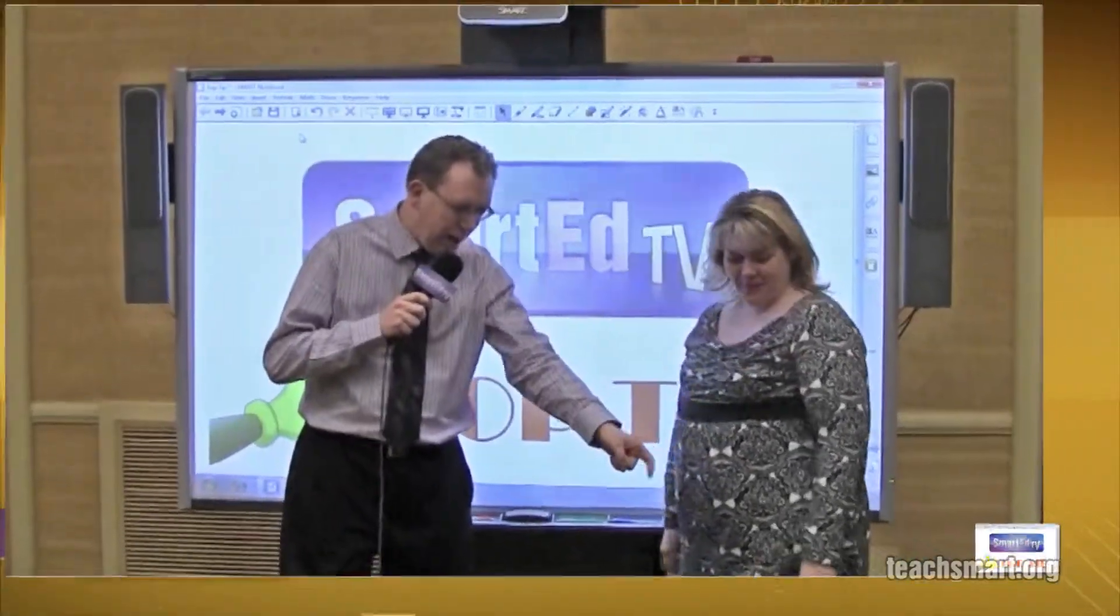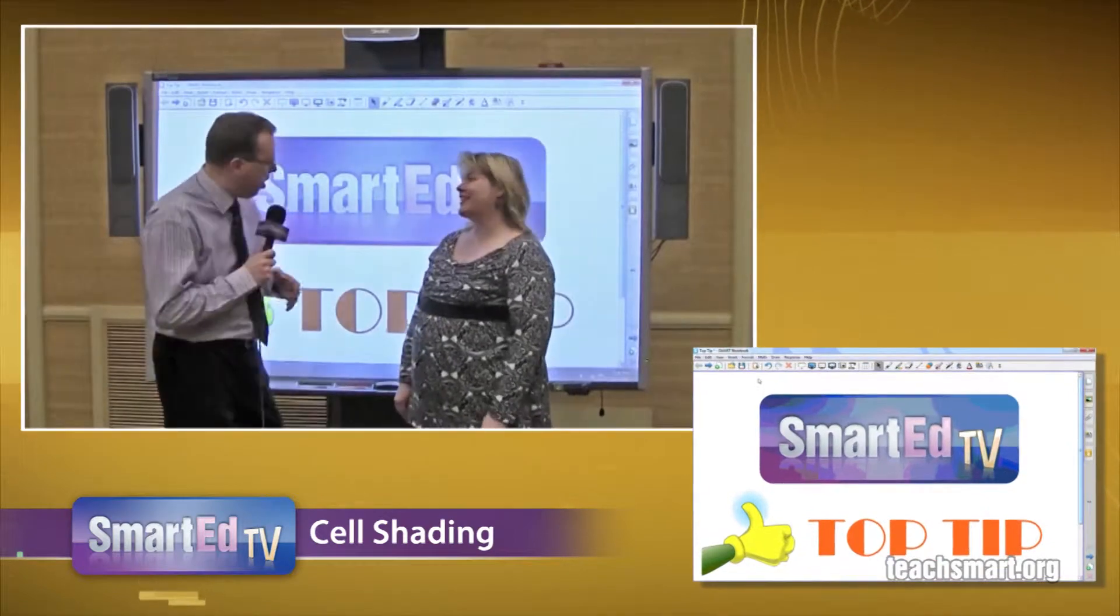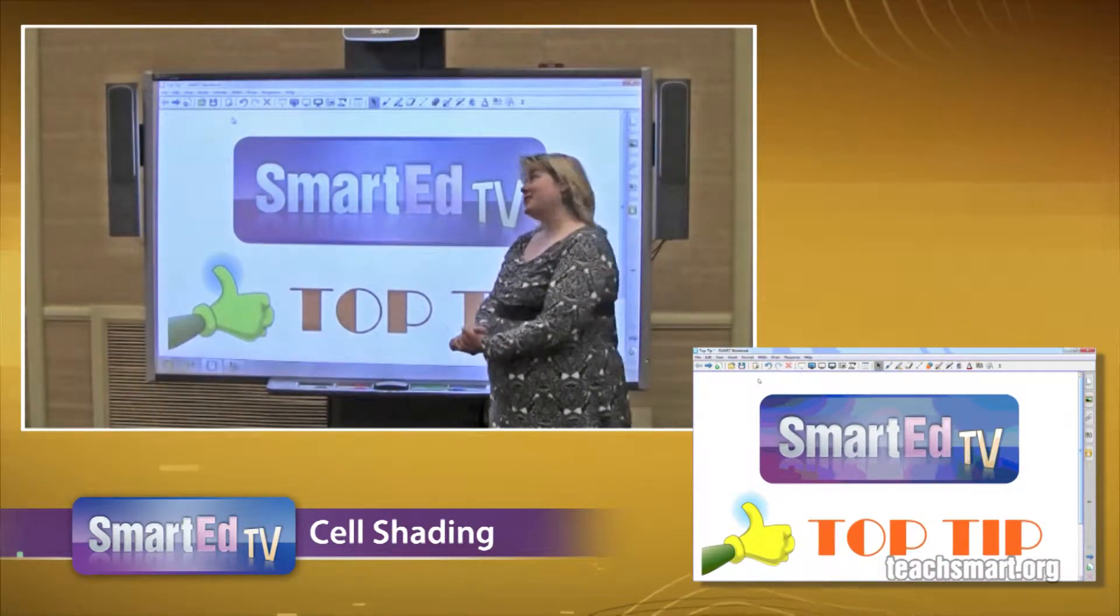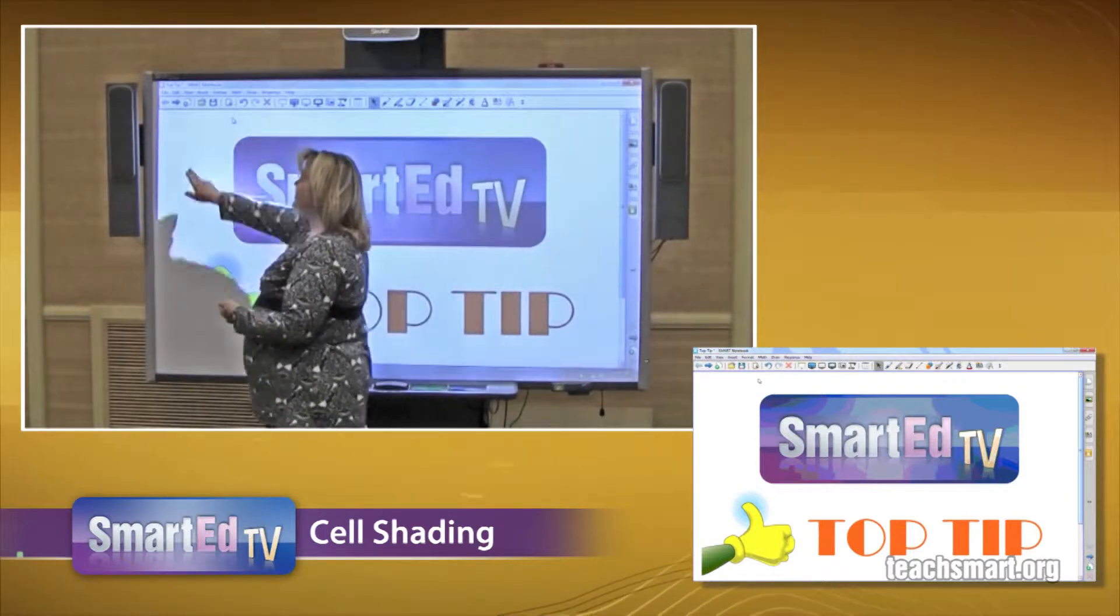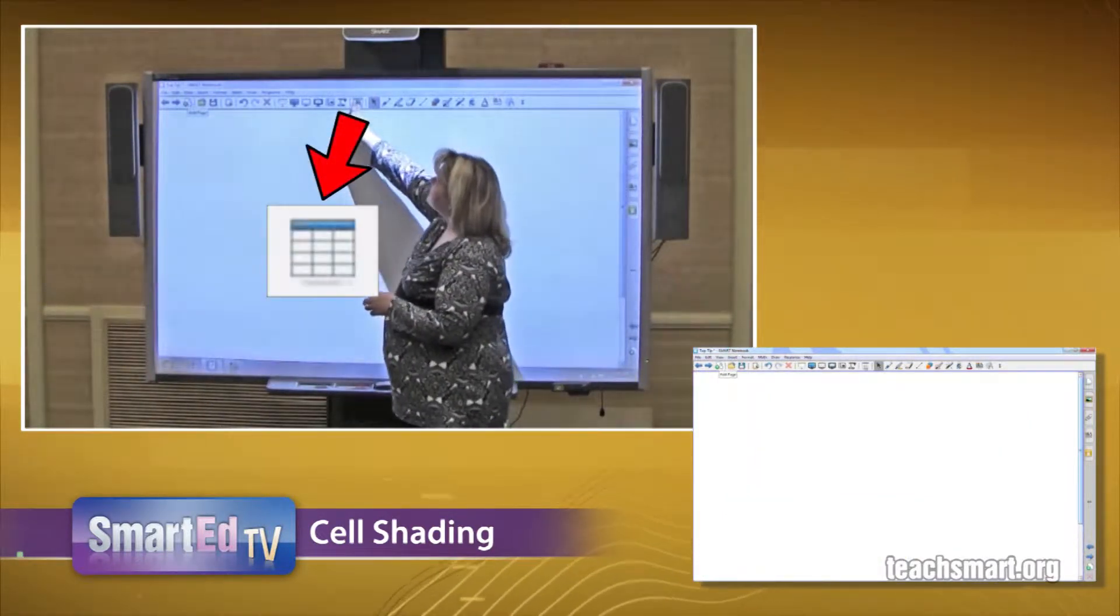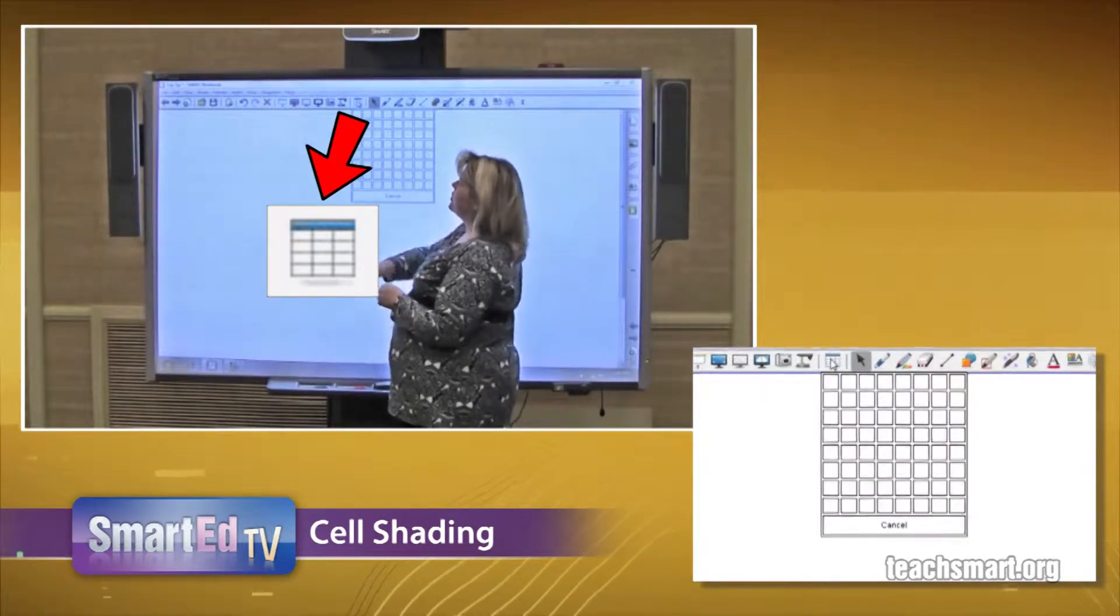All right, so we're going to put a desktop up there and show us some cell shading. Well, of course, let's start by adding a new page. So I'll go to my notebook toolbar, press my green add a page and I will then select my table tool icon in my notebook toolbar.